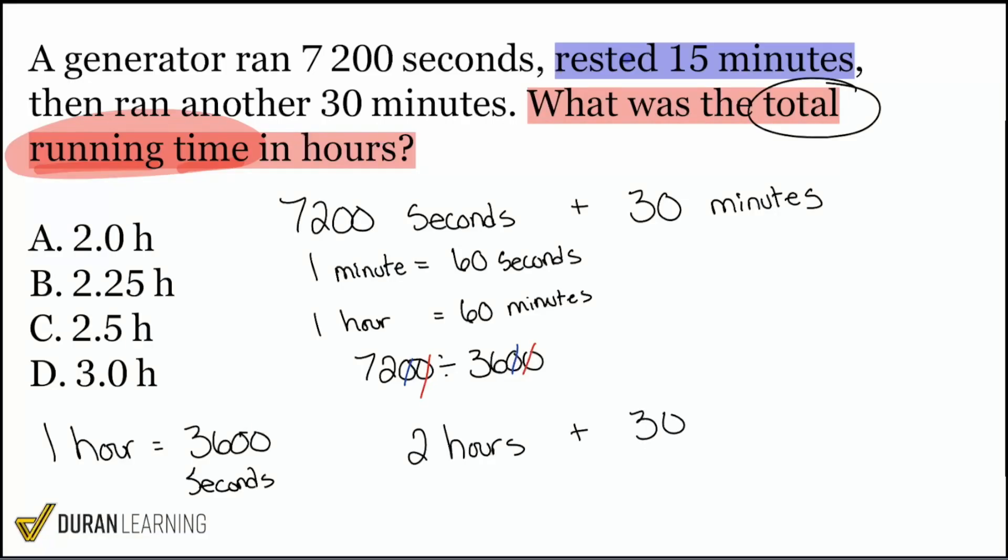But we still have the plus 30 minutes. My party people, how can we re-represent 30 minutes as hours? How much of an hour is 30 minutes? Yeah, 30 minutes is the same as half of an hour. So we can add that as zero point five hours. So boom, we can convert that right there on the spot. And that gives us two hours plus half an hour, which is going to be 2.5 hours. And there we are. That's how our answer becomes answer choice C, 2.5 hours.